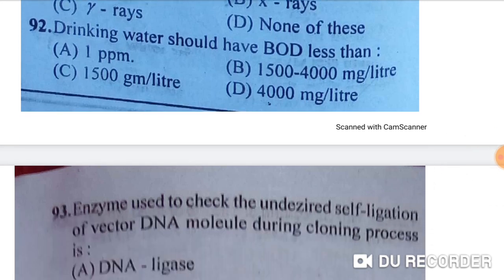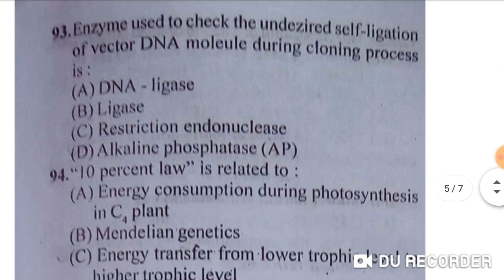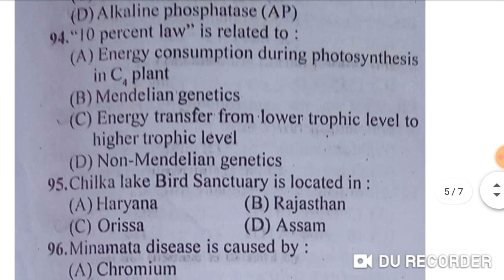Drinking water should have a BOD less than 1 ppm — option A is correct. The enzyme used to check undesired self-ligation of vector DNA molecules during cloning is alkaline phosphatase — option D is correct. The 10 percent law is related to energy transfer from a lower trophic level to a higher trophic level — option C is correct.